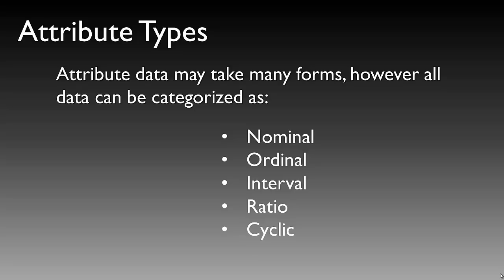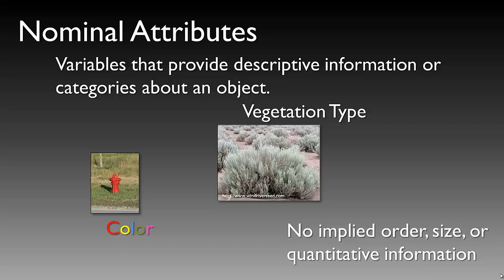Attribute data can take many forms, organized into five different categories: Nominal, Ordinal, Interval, Ratio, and Cyclic. Nominal attributes are variables that provide descriptive information or categories about an object — for example, a vegetation type such as sagebrush, or a color. There is no implied order, size, or other quantitative information associated with a nominal attribute. For example, a fire hydrant is red — that color is the nominal attribute.